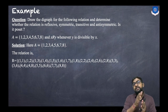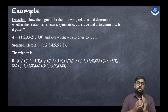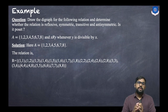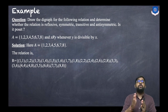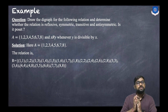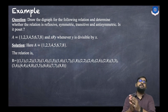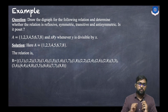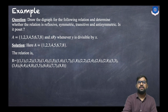The relation R consists of: every number divides itself, so (1,1), (2,2), ..., (8,8) are included. Then 1 divides each number: (1,2), (1,3), ..., (1,8). Then 2 divides 4, 6, 8: pairs (2,4), (2,6), (2,8). Then (3,6), and (4,8). These are all the entries in the given relation.